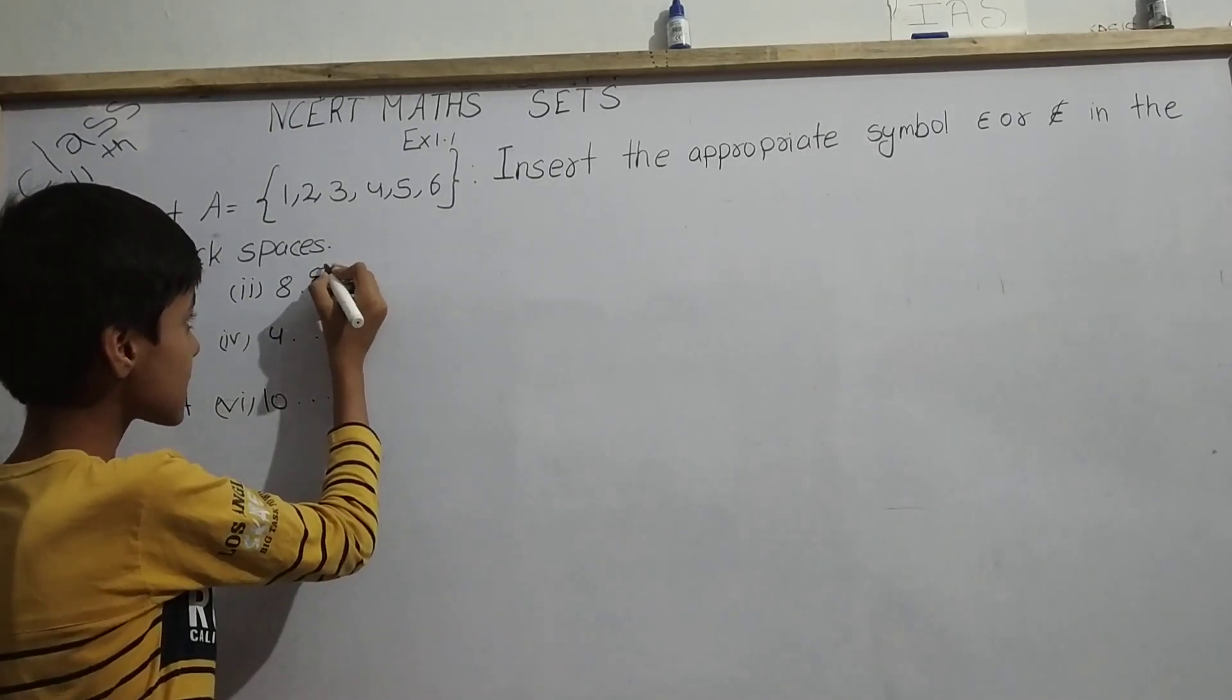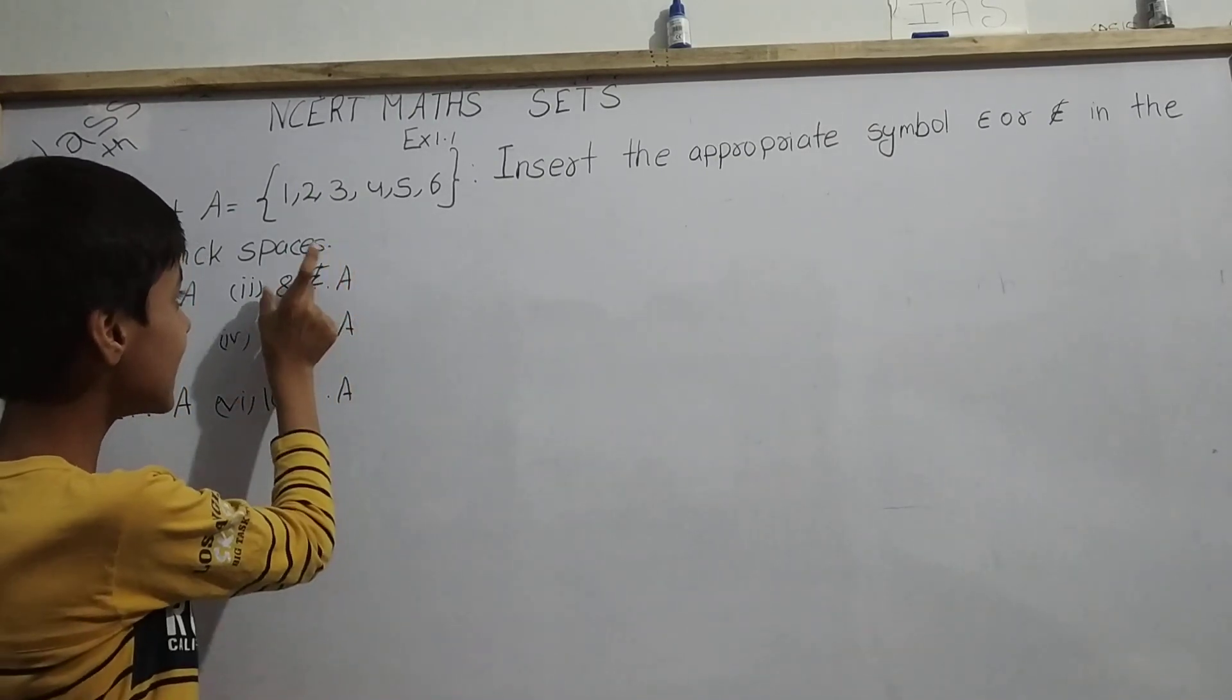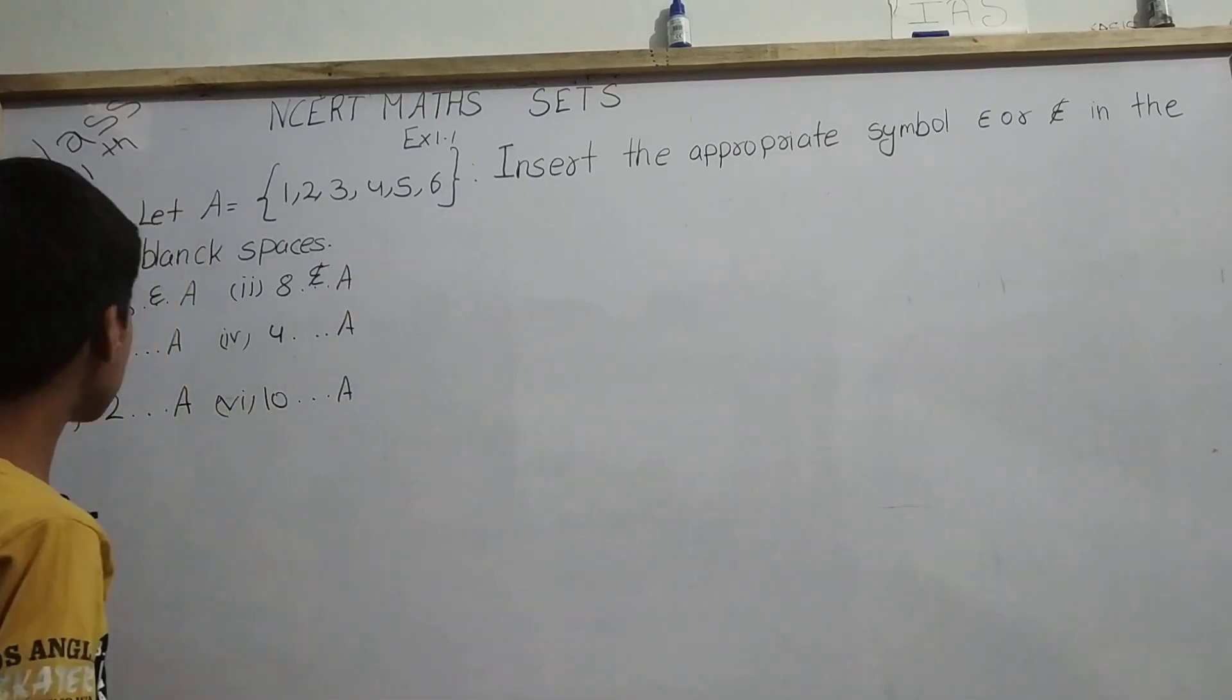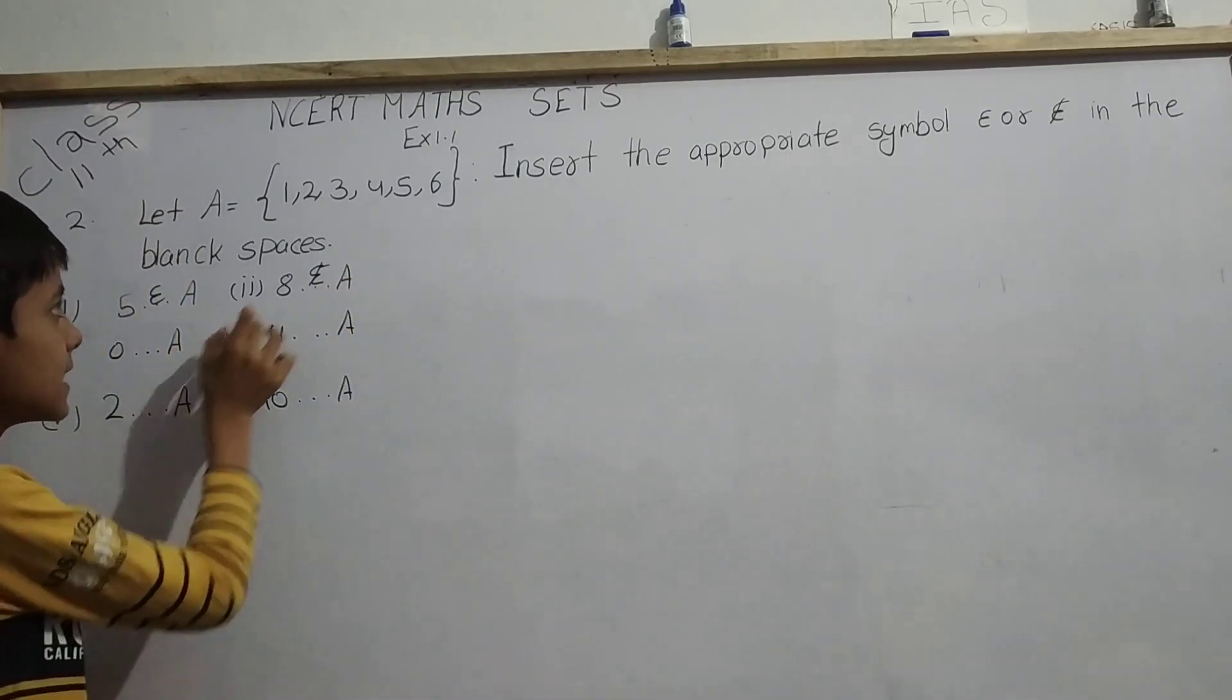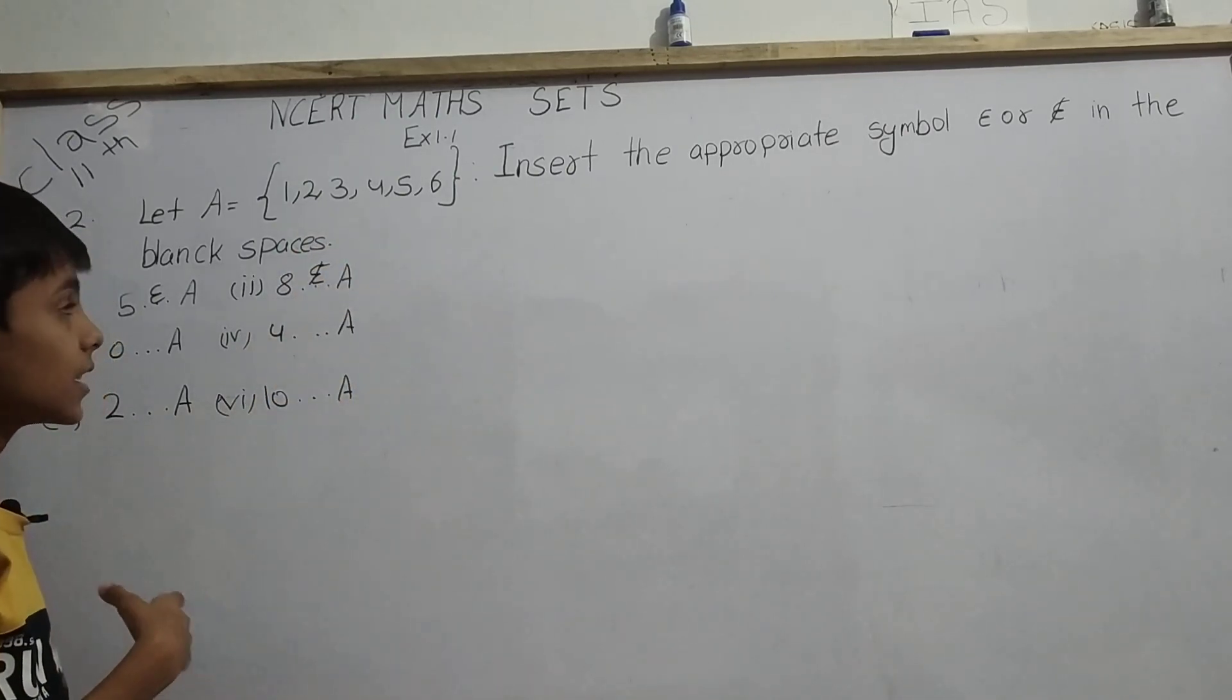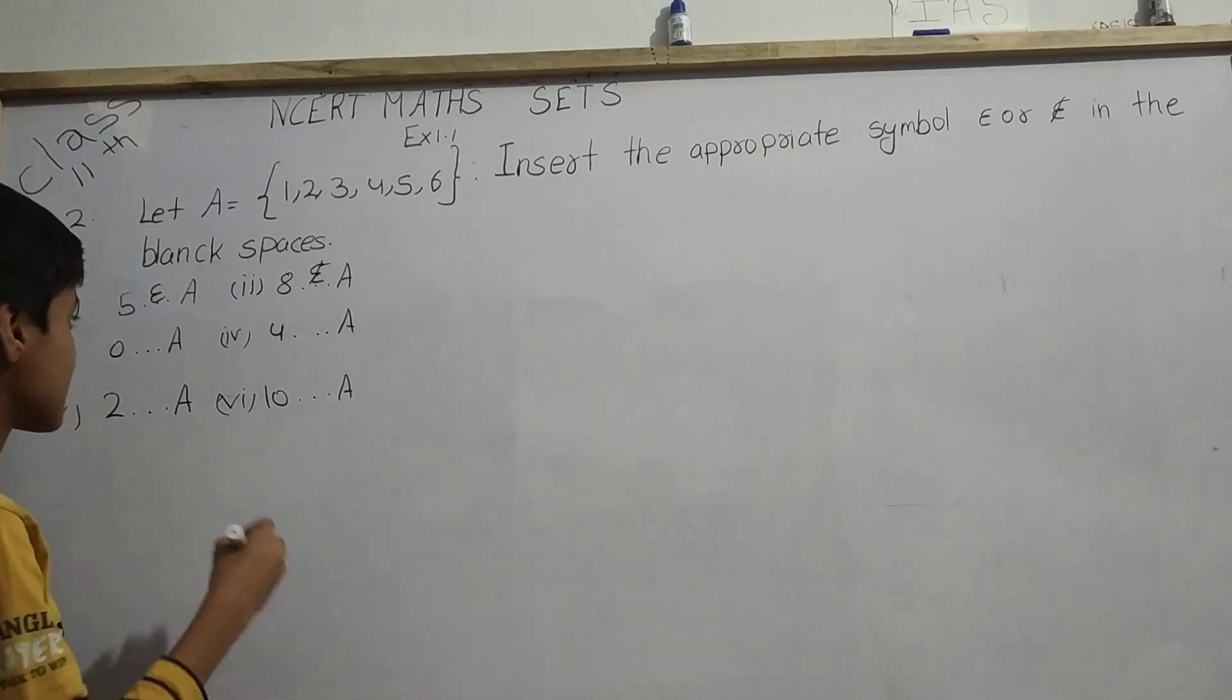Here we will put epsilon and cross it like this. Because here we have 1, 2, 3, 4, 5, 6 where there is no 8. Where there is no spot for 8, it means 8 does not belong. So we will put epsilon not symbol.